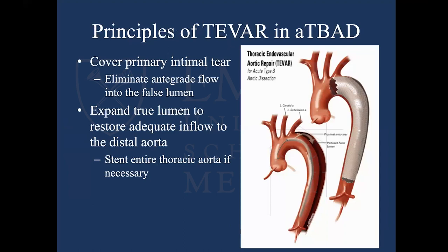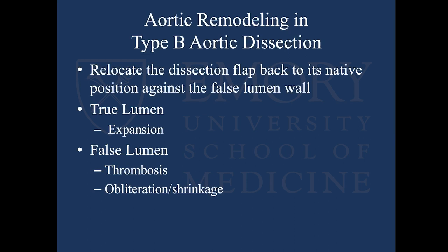What's the goal in stenting an acute type B? The goal is to cover the primary intimal tear, which is at or just distal to the left subclavian, thereby eliminating antegrade flow into the false lumen. If you do that, it's considered a success. You will expand the true lumen, restore adequate inflow to the distal aorta, and eventually thrombose the false lumen. You are also relocating the dissection flap back to its native position, and hopefully over time, obliterate and shrink the false lumen.